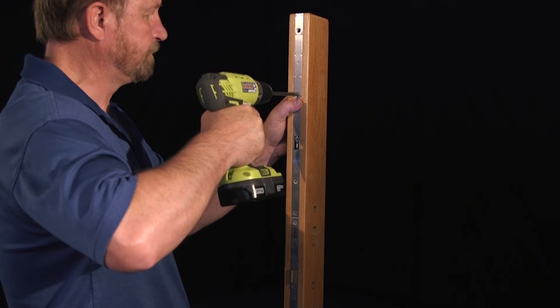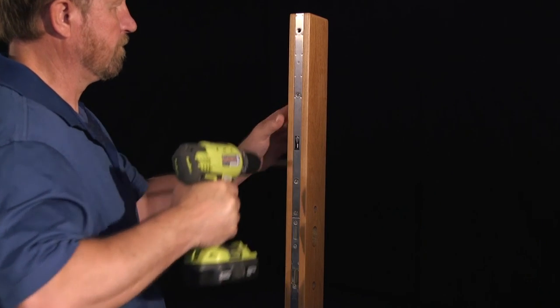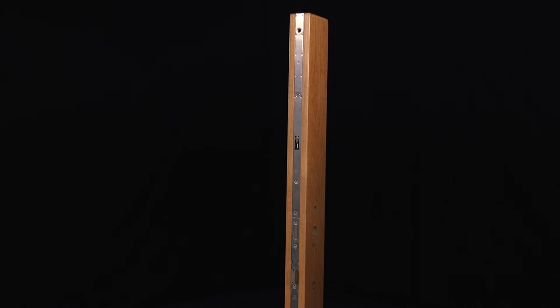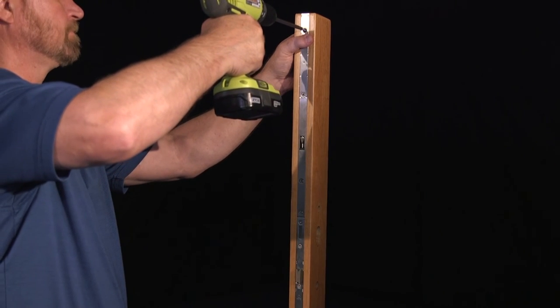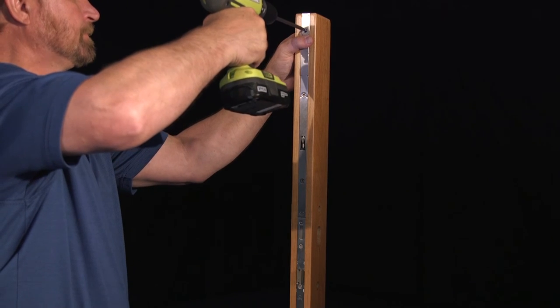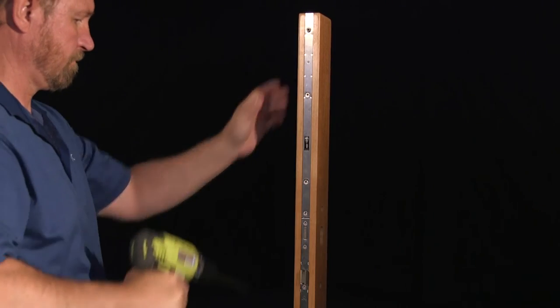After this screw is installed, begin with the mounting hole closest to this screw and begin replacing the stainless steel Phillips-head mounting screws that you removed earlier, starting at this location, continuing to the top edge of the door.